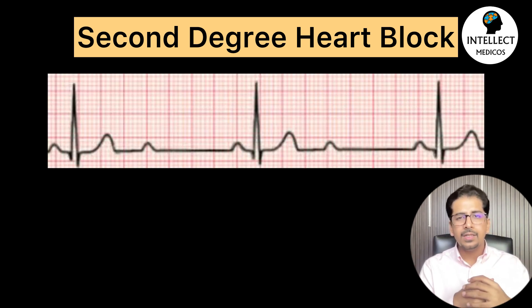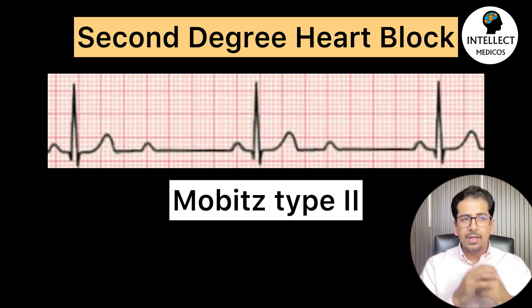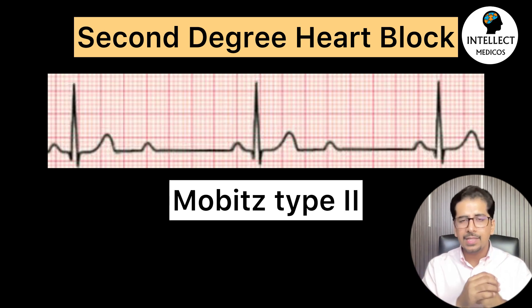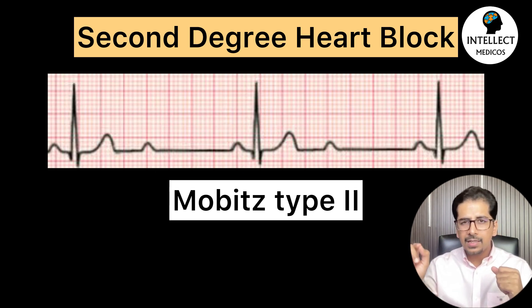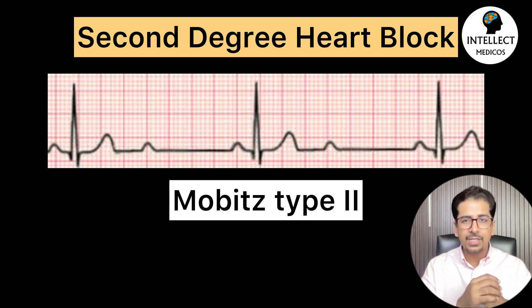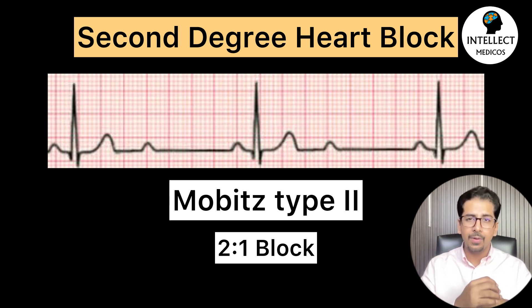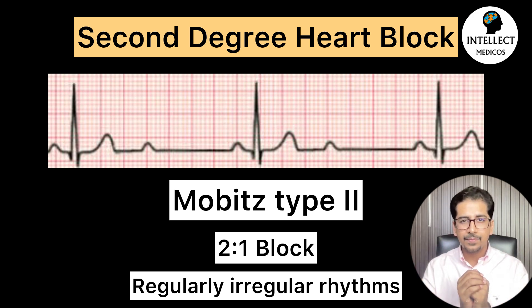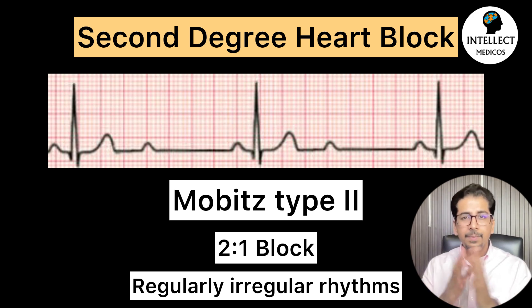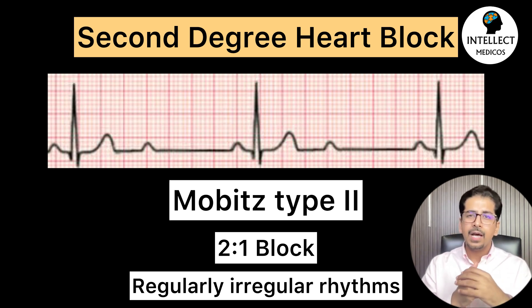In Mobitz type 2 second-degree heart block, there is a dropped beat following a regular pattern. For example, after every 2 P-waves, the third is conducted — as seen on the ECG, this is termed a 2:1 heart block. These arrhythmias come under regularly irregular rhythms — there is irregularity, but it follows a consistent pattern.